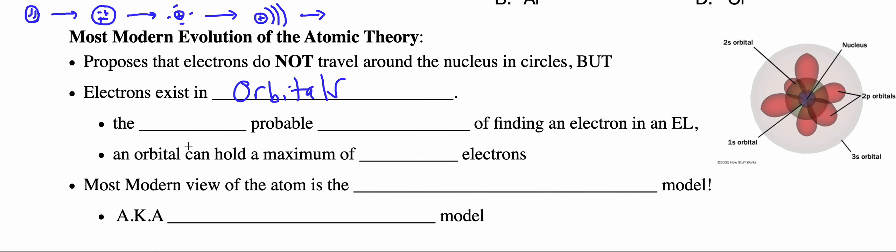An orbital is specifically defined as the most probable location of finding an electron in that energy level or electron shell.